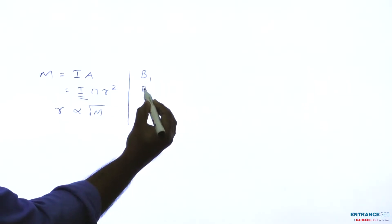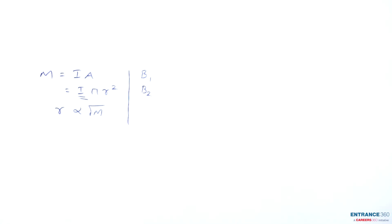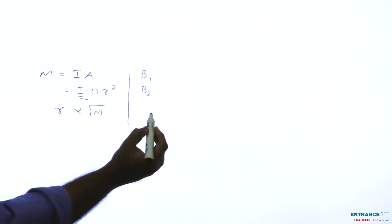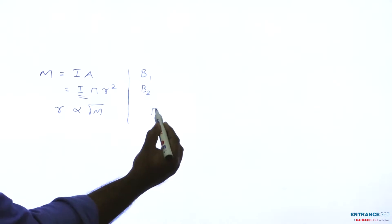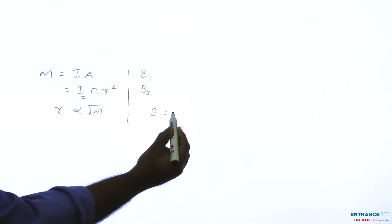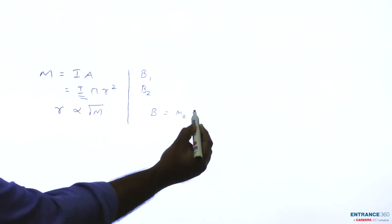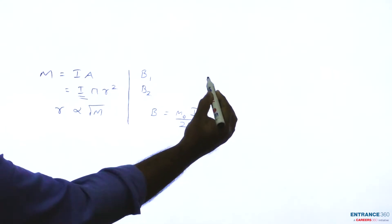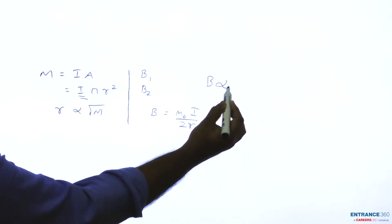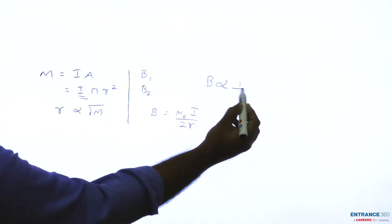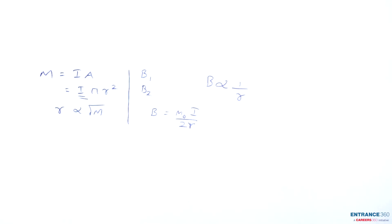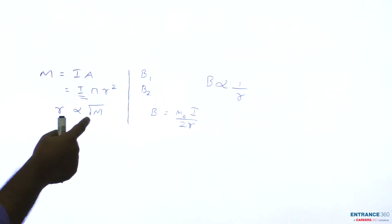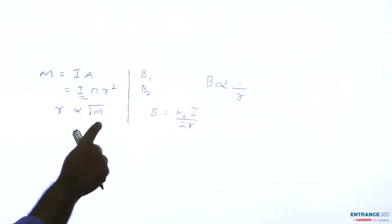At that time b2 is the magnetic field. Note that for a circular loop at its center, magnetic field b is given by mu 0 i by 2r. So magnetic field is inversely proportional to radius since i is constant. Mu 0 is also a constant, so b is inversely proportional to radius, but radius is proportional to root m.